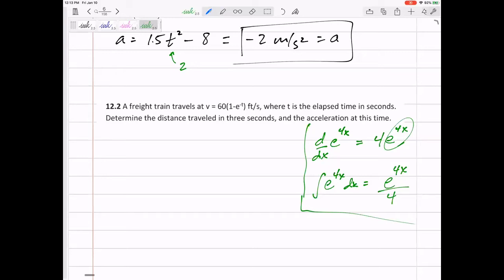Exponents. It's ln, natural log. So, all right. But anyway, velocity is 60 times 1 minus e to the negative t.